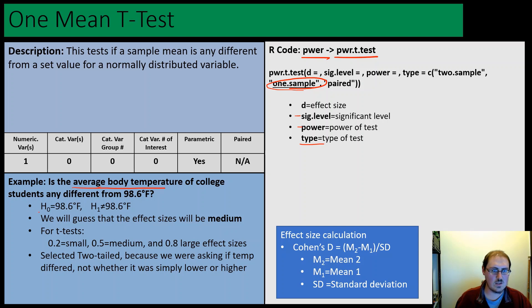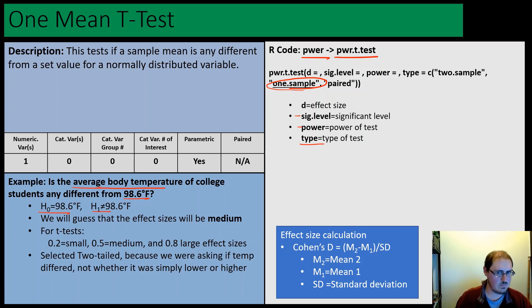We set up our hypotheses: the null is that the mean is no different from the value of 98.6, and the alternative is anything different. We're not going to do any calculation here — we're just going to make an estimated guess of effect size, so we'll say medium, and for a t-test that's going to be 0.5.